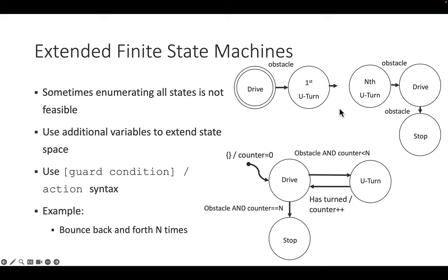In extended finite state machine syntax this is known as a guard condition: the event is followed by a slash and then an action. For example, we have no guard condition at the start — we jump directly into the drive state with an action that sets the counter to zero. After every turn we have an event called 'has turned' with an action that increments the counter. We get away with just three states: when driving and an obstacle is detected, if the counter equals N we stop; otherwise if the counter is less than N we do the u-turn.